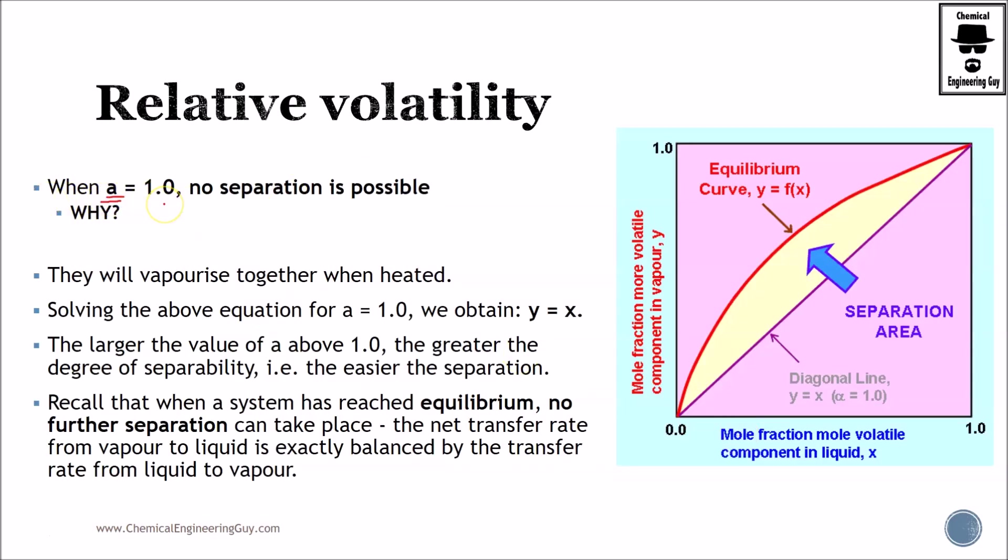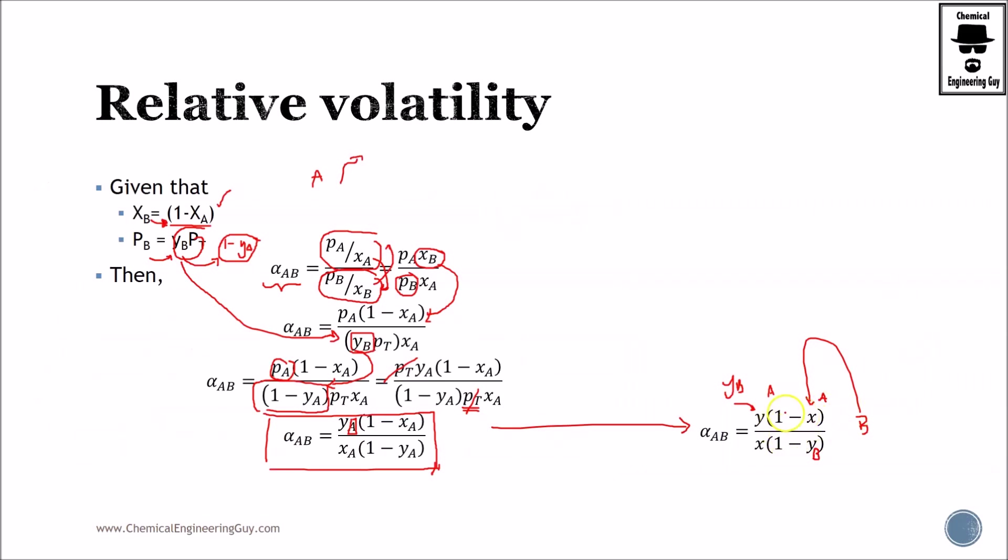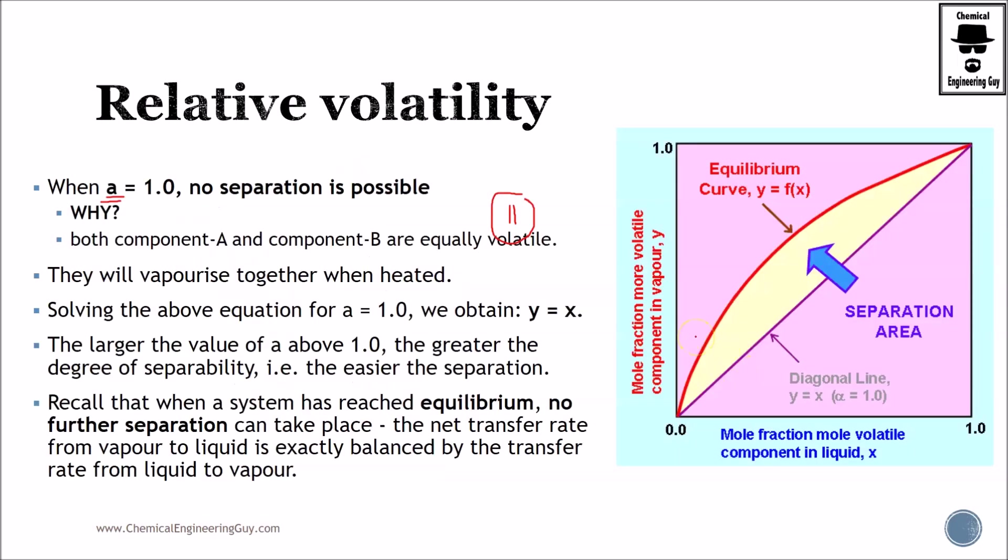When alpha value equals one, there is no separation possible. I want you to pause the video and try to guess why. When this equals one we cannot solve, and yes, it is because both components are now equally volatile. So if A is going in the same rate as B, we have this mixture A plus B and we're heating it. We'll see that A and B are going in the same rate so we will not have any separation. The composition will remain the same and the vapor condensate will remain the same.